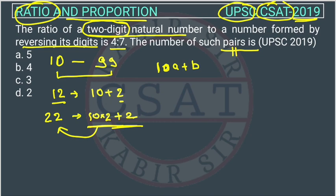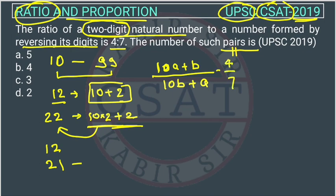When we reverse the digit, what will it become? The reverse of 12 will be 21. When we write it in this format, it will become 10b plus a. The ratio of this thing is given - the ratio of this is 4 by 7, so this is equal to 4 by 7.